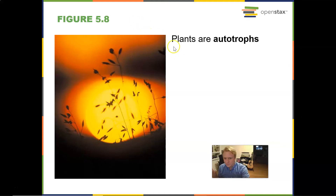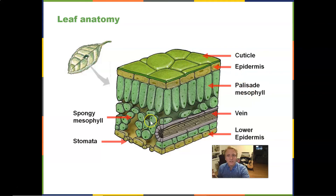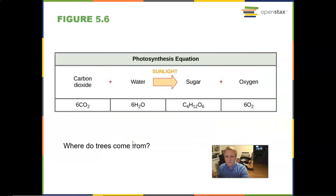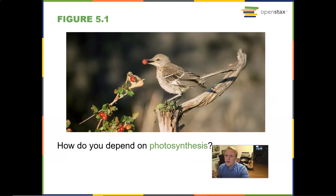That was the first part of this lecture. You should know about the leaf anatomy, that photosynthesis is principally taking place in the mesophyll, what the cuticle's purpose is, and what the stomata's purpose is. You should also have the photosynthesis equation memorized. I will see you guys in the next lecture.